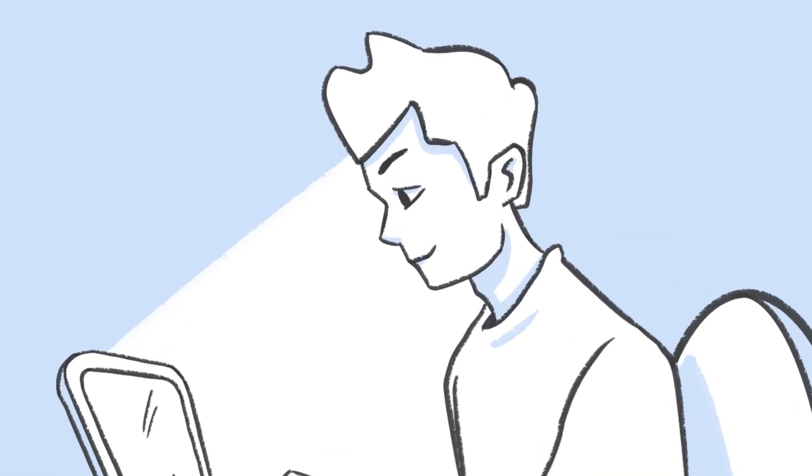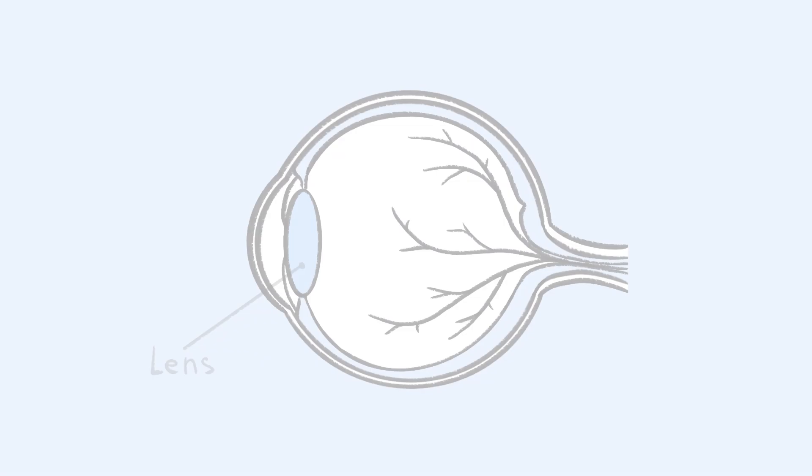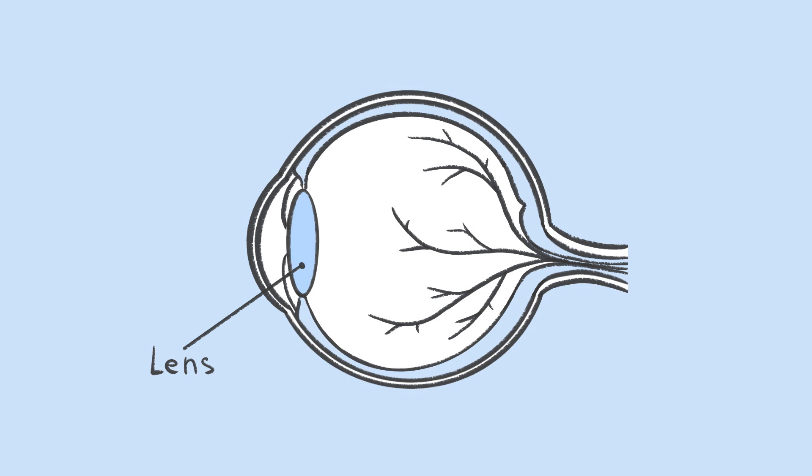Your eyeball is a fluid-filled ball. In the front is a flexible lens that moves from near and far focus, and in the back is the receiver for the light signal, the retina.